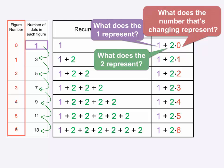Let's say we don't know the figure number, and we'll just use a variable like n for the figure number. We still start with 1, but this time we don't know how many 2's we are adding. Well, we're going to add n 2's, because the figure number tells us how many 2's to add. So when we add n 2's, that's just 2 times n. We can plug any figure number in for n and get the number of dots. So the dots always equal 1 plus 2n, where n is the figure number.